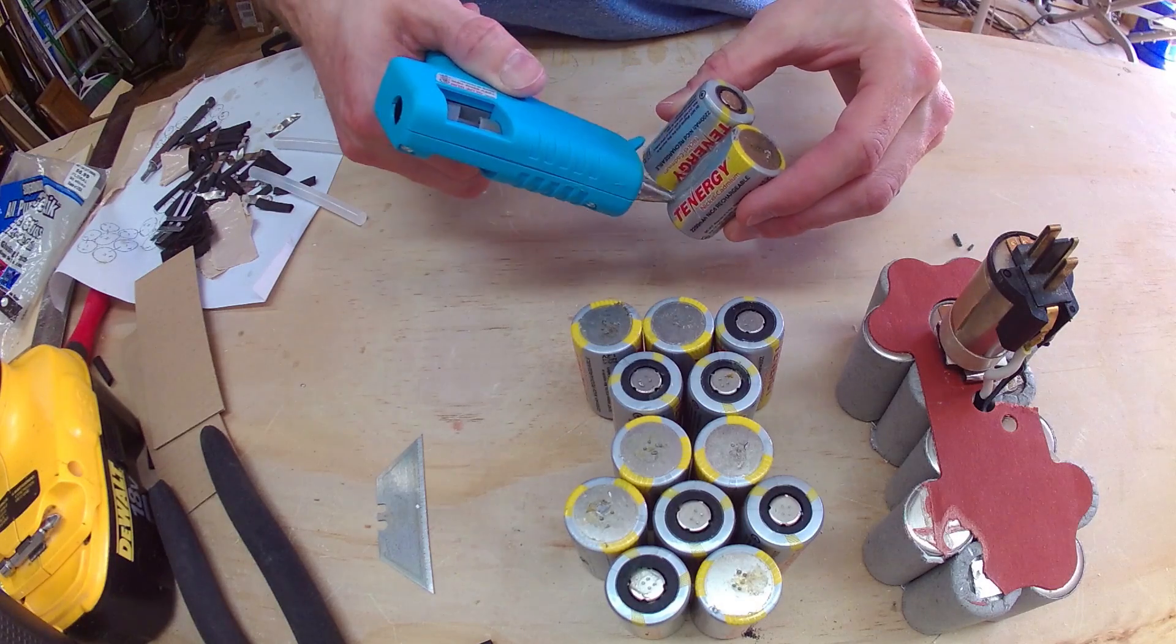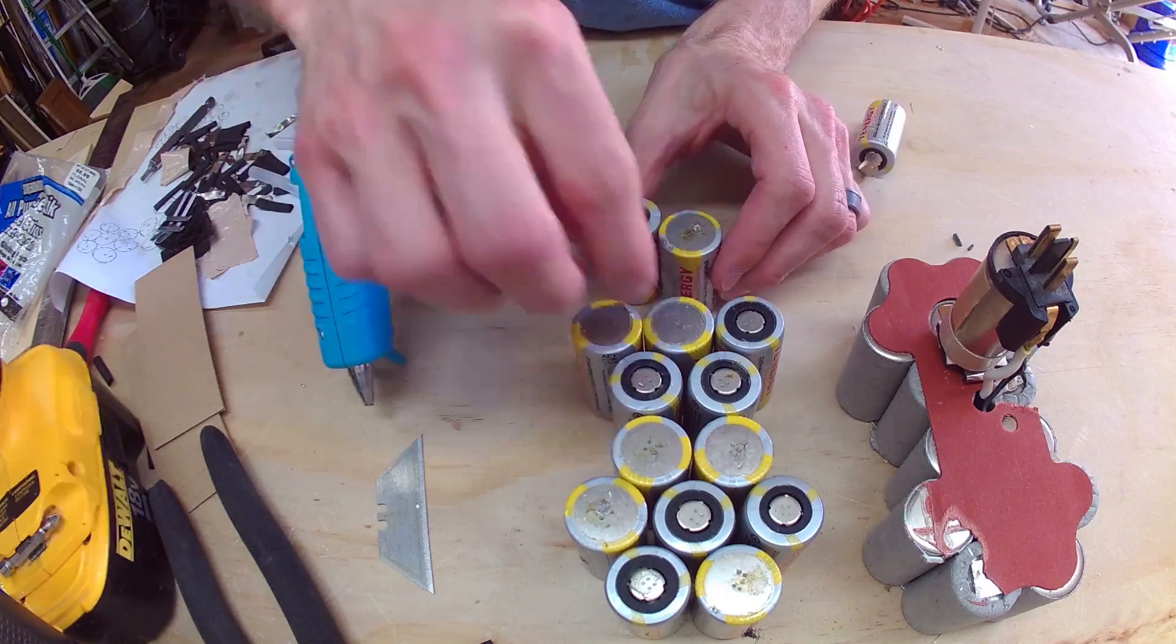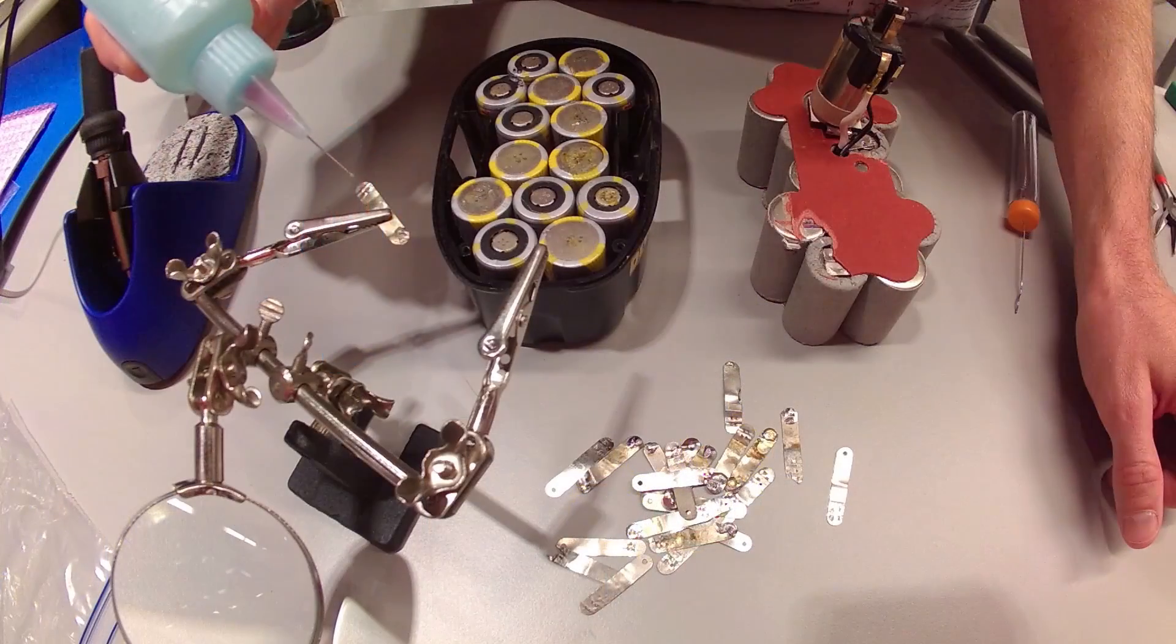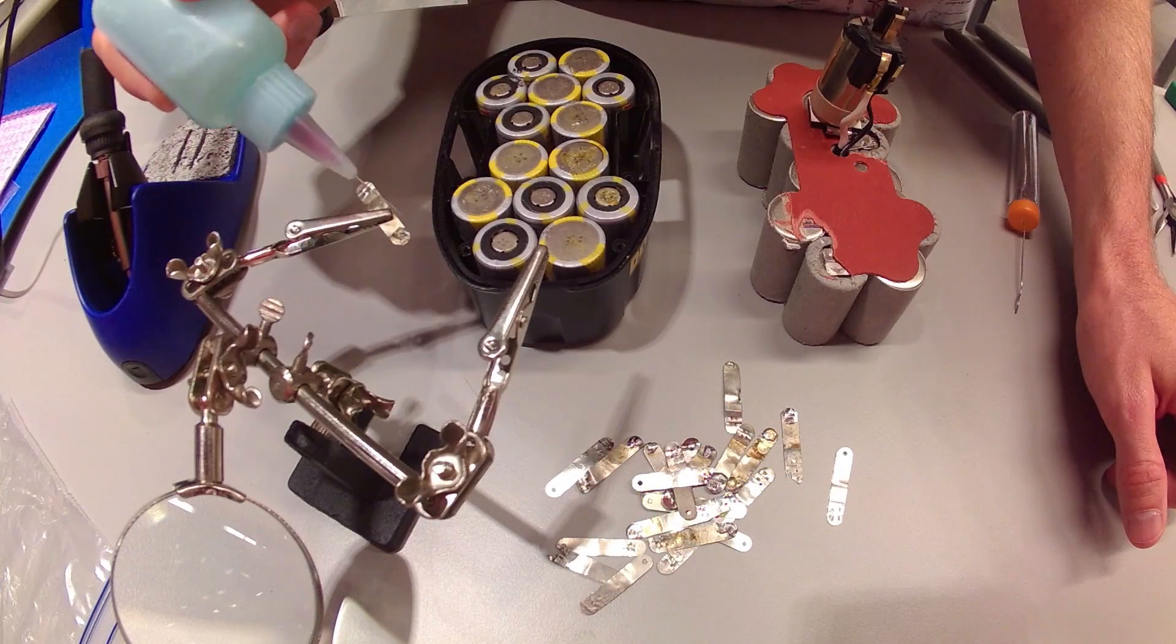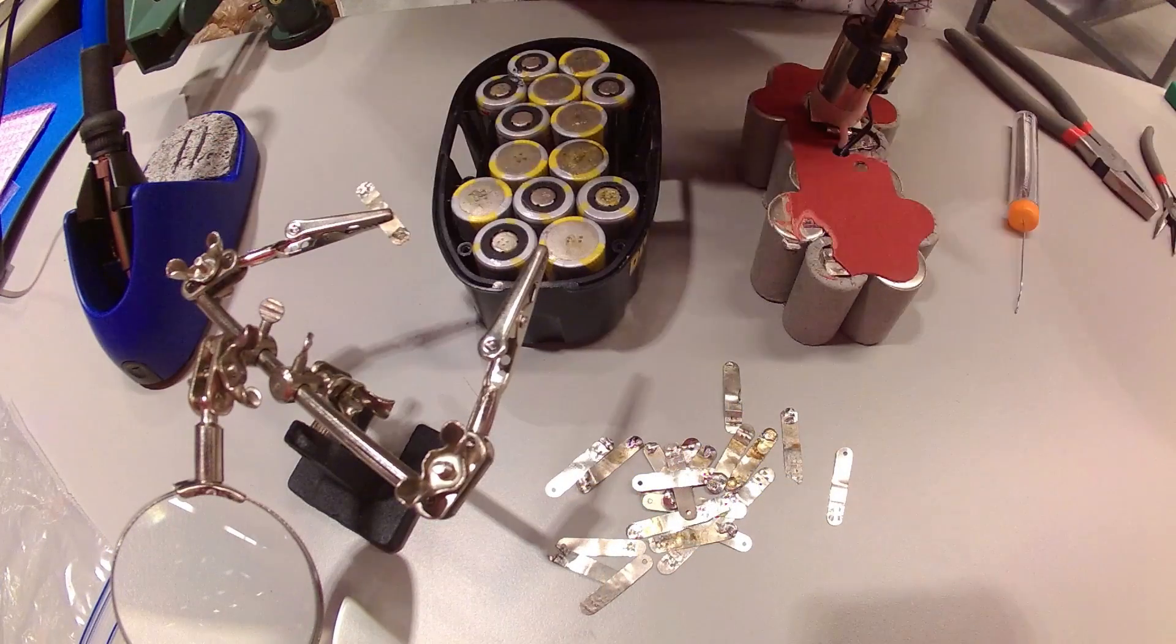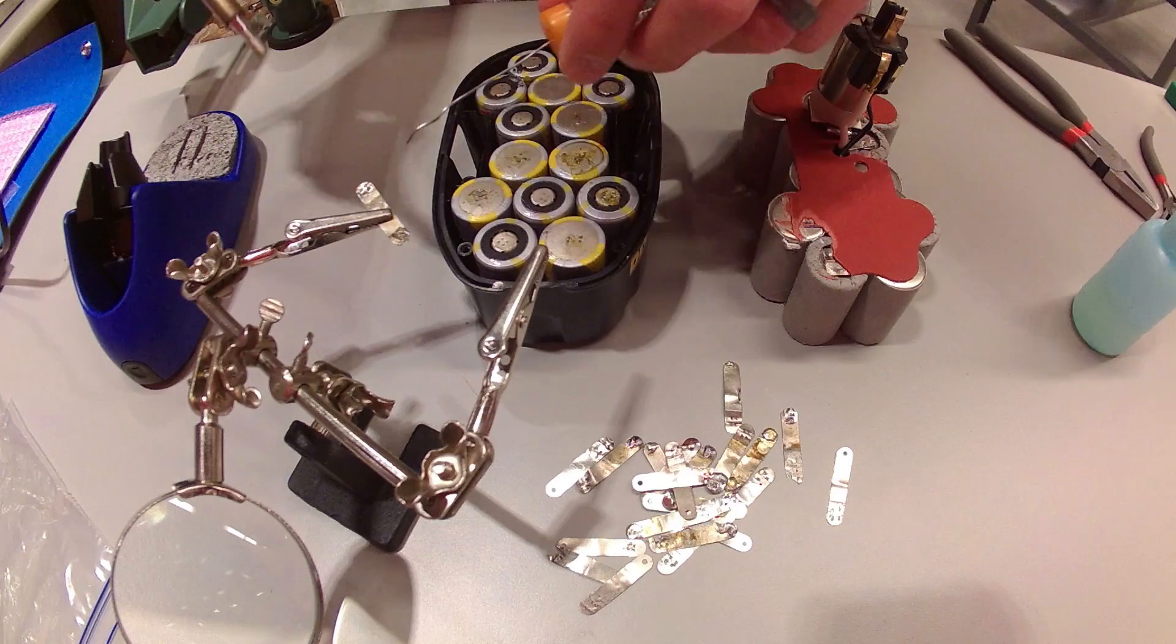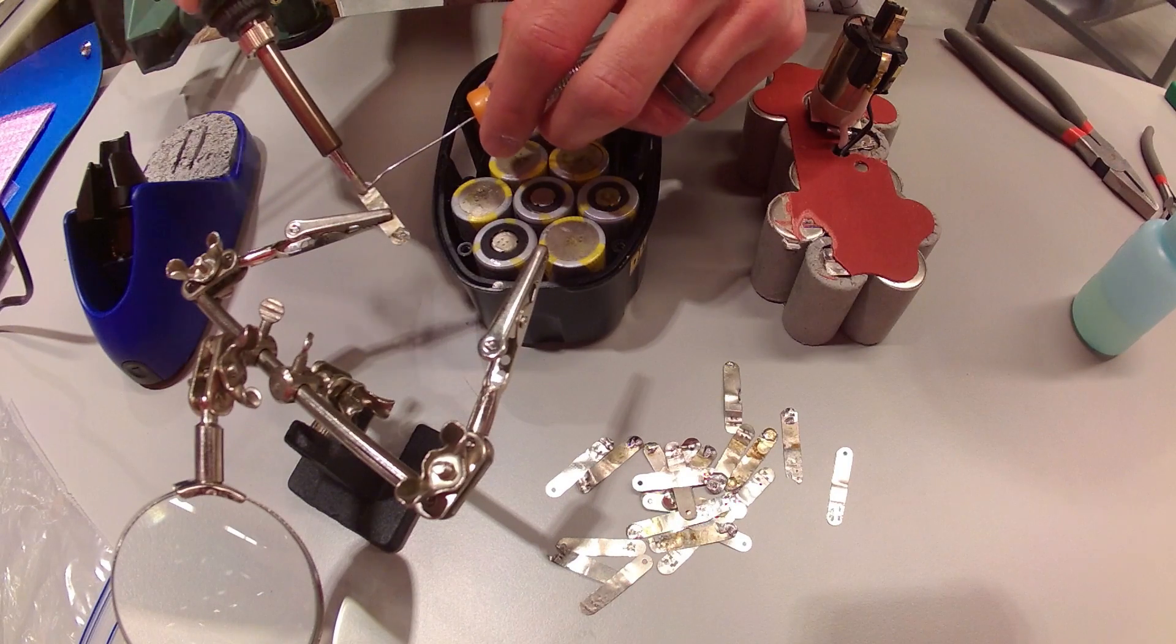Then I'm using some hot glue here to temporarily hold them together. Once I've flattened my solder tabs back out, I'm gonna put a little bit of flux on all the connections and then I'm gonna drop a little bit of solder on the end of each one.